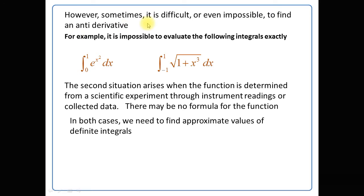However, sometimes it is difficult or even impossible to find an anti-derivative. For example, it is impossible to evaluate the following integrals exactly: integration of e^(x²) with respect to x from 0 to 1, and similarly integration from -1 to 1 of the square root of (1 + x³) with respect to x. The second situation arises when the function is determined from a scientific experiment through instrument readings or collected data — there may be no formula for the function. In both cases, we need to find approximate values of definite integrals.